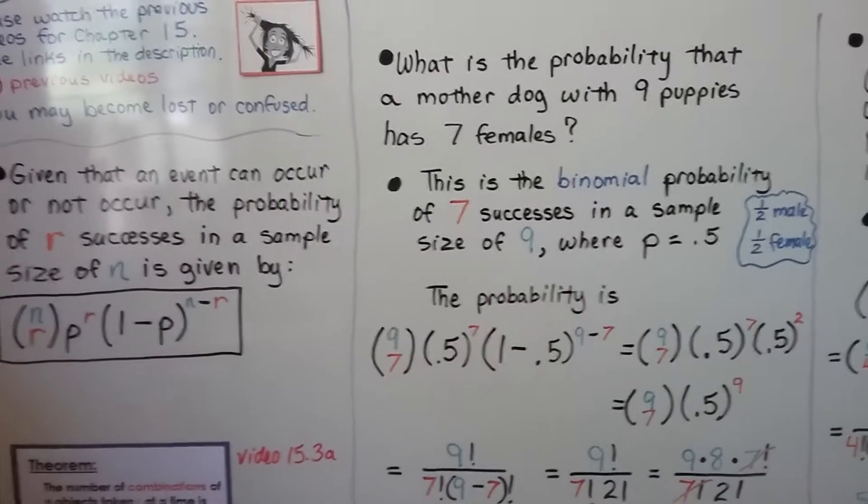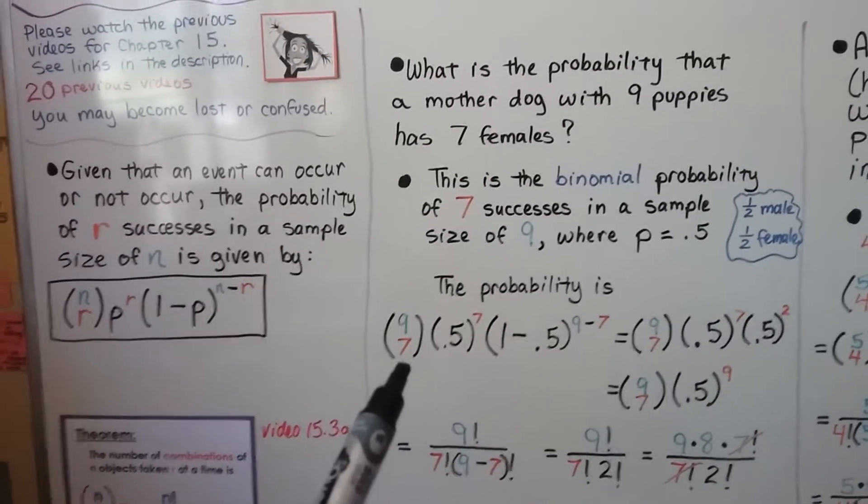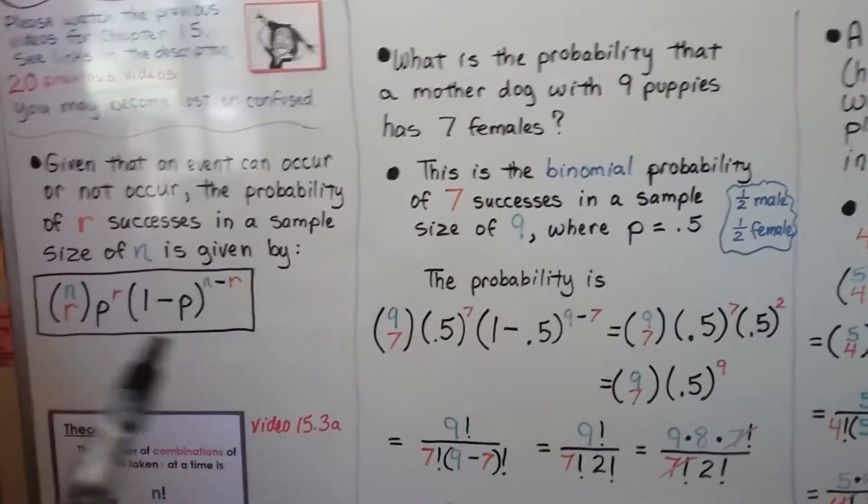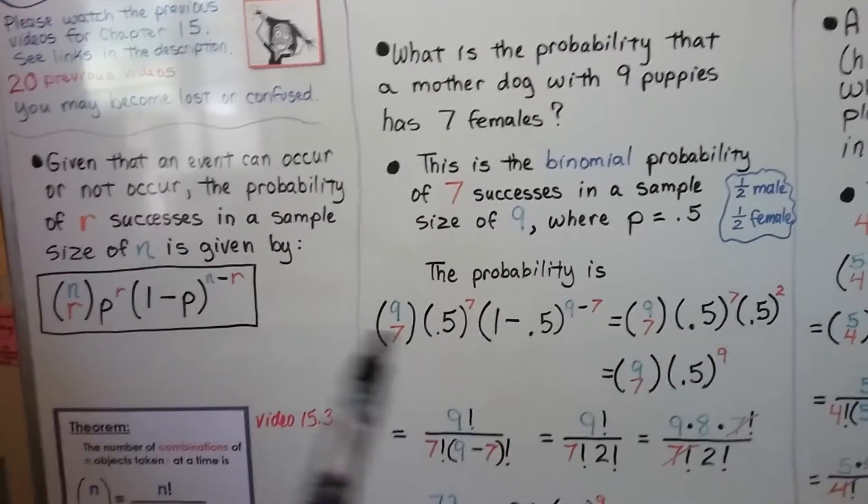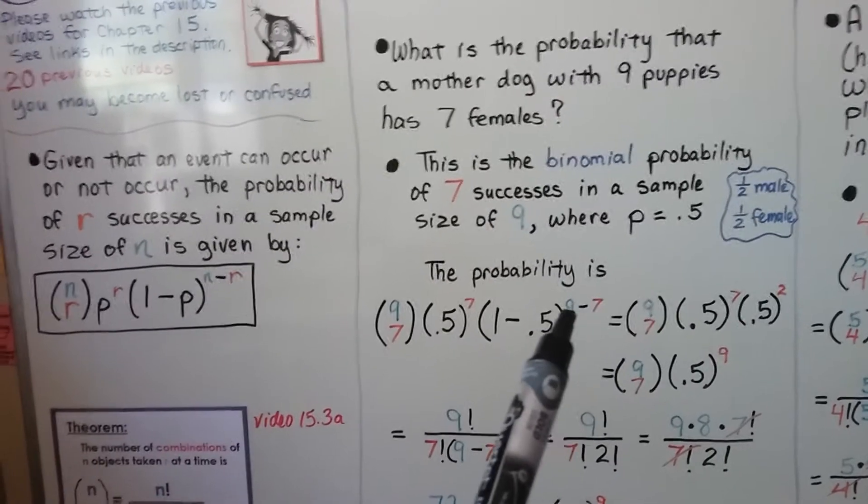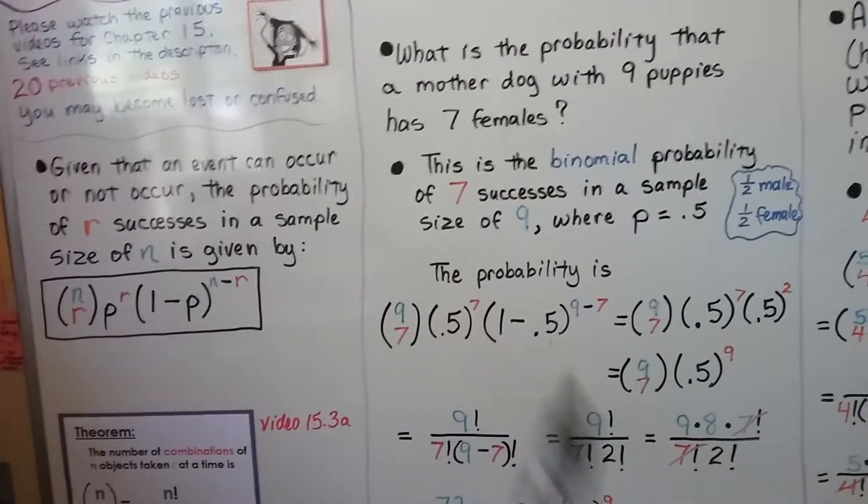So using this formula we've got a nine choose seven here. p is 0.5 so it's to the seventh power, see the r. Then we do one minus 0.5, one minus the p, and that's to the nine minus seventh power, see? The n minus rth power.